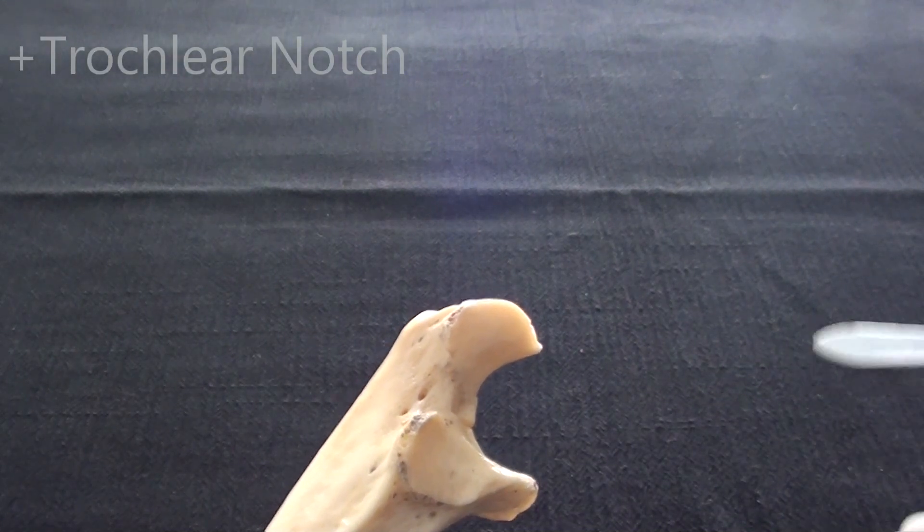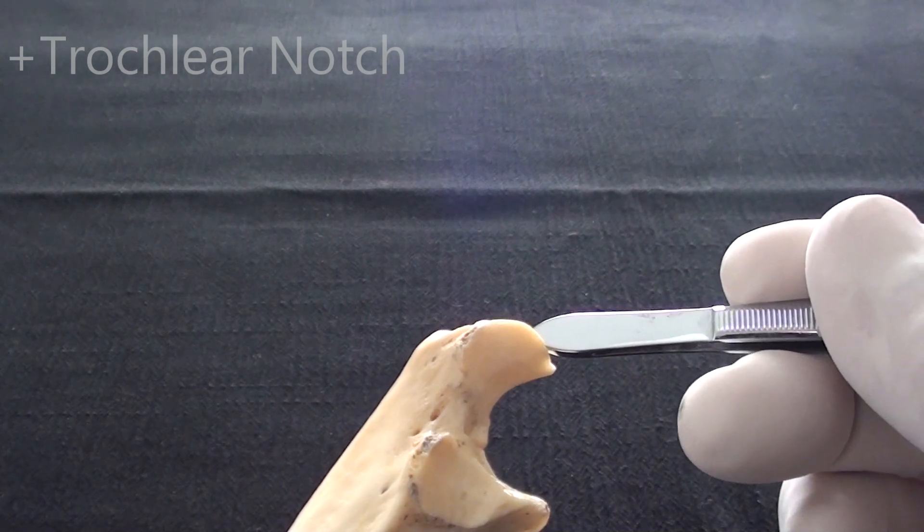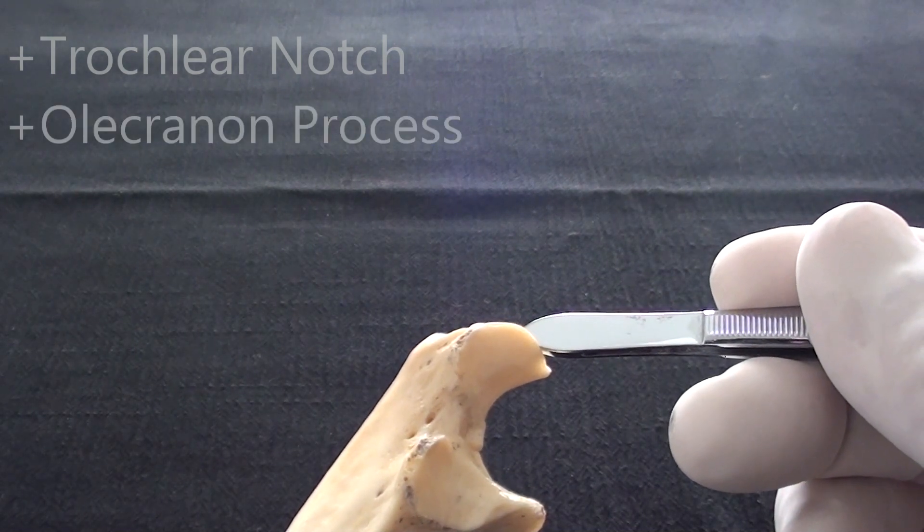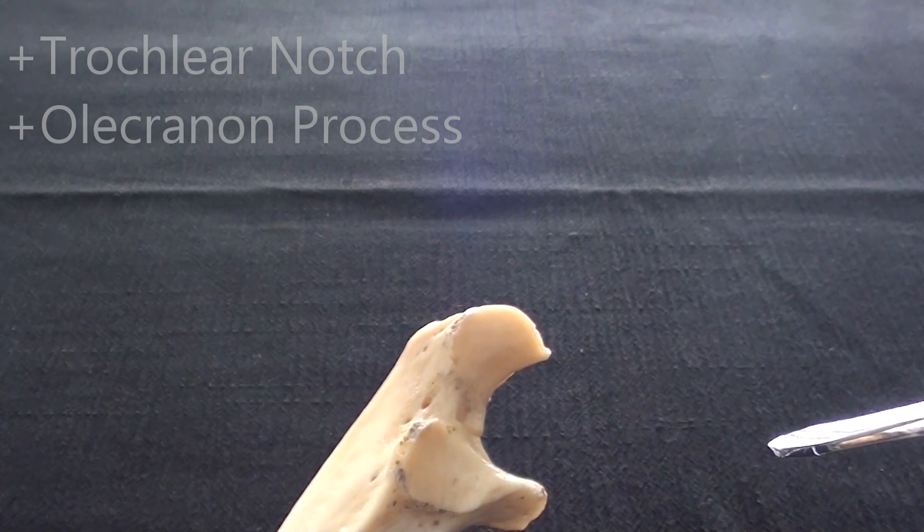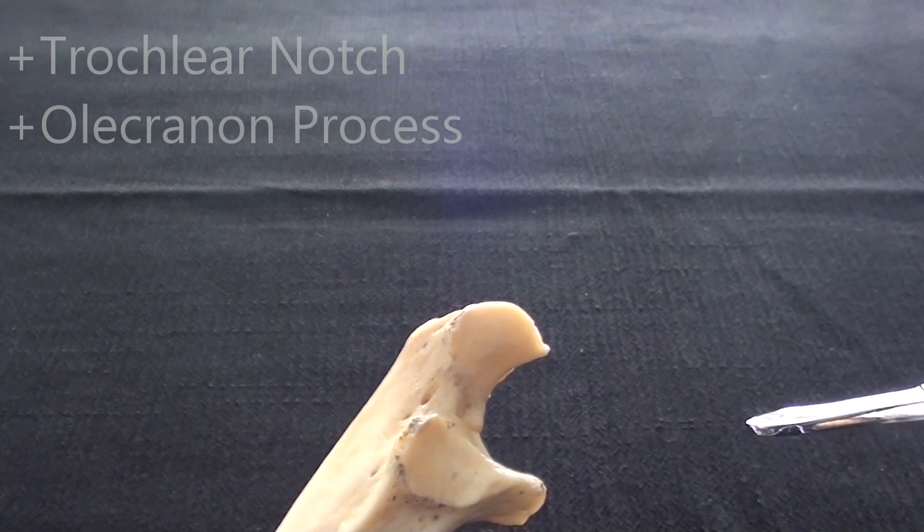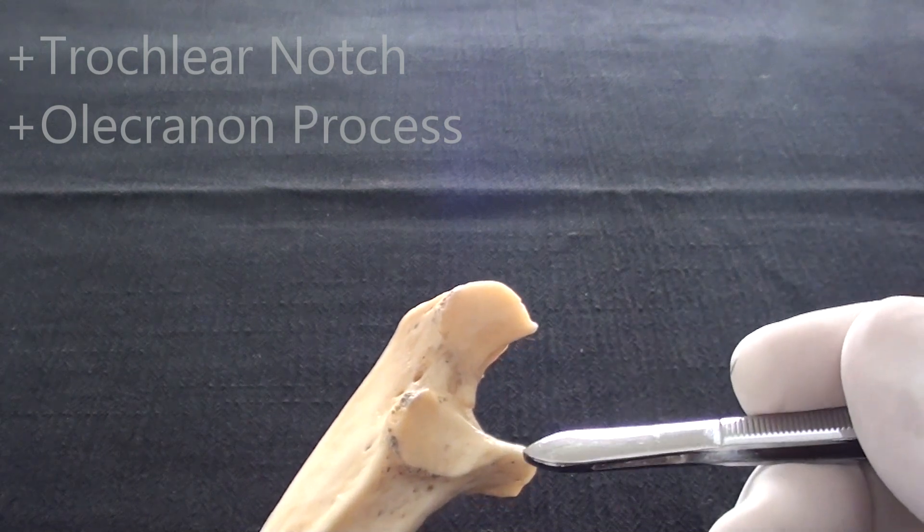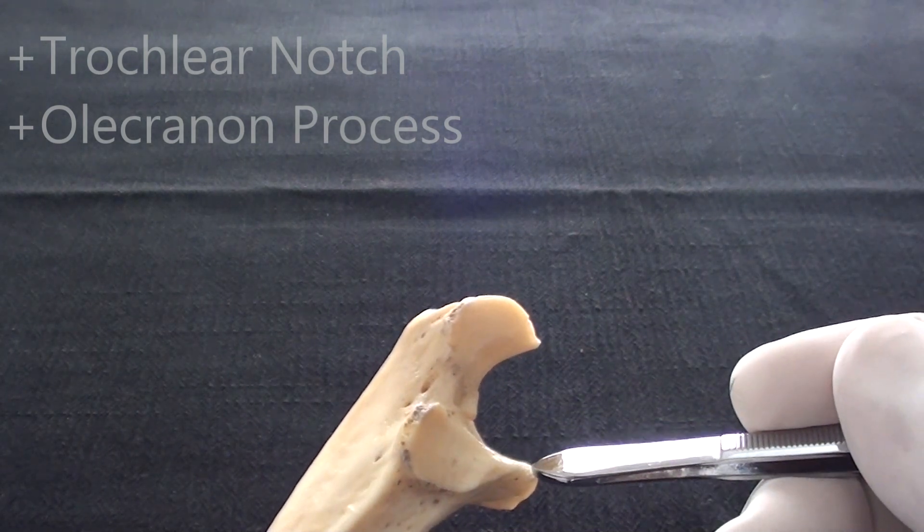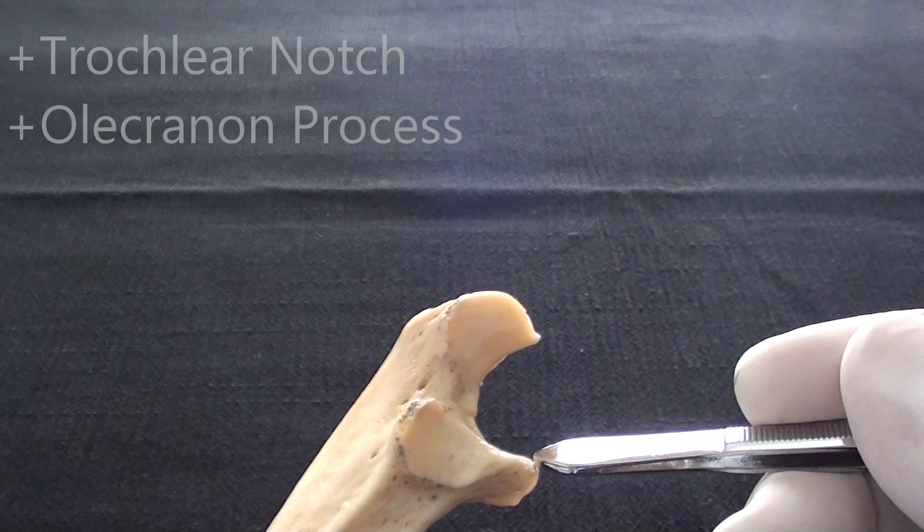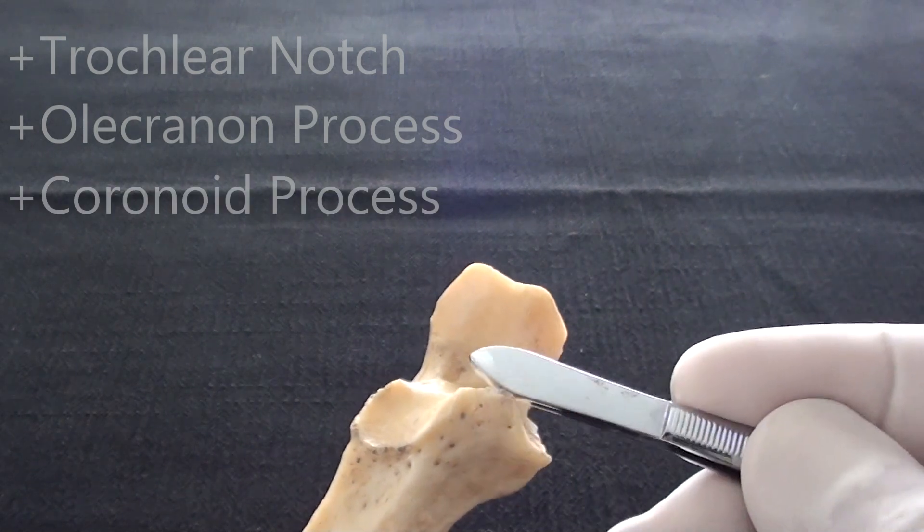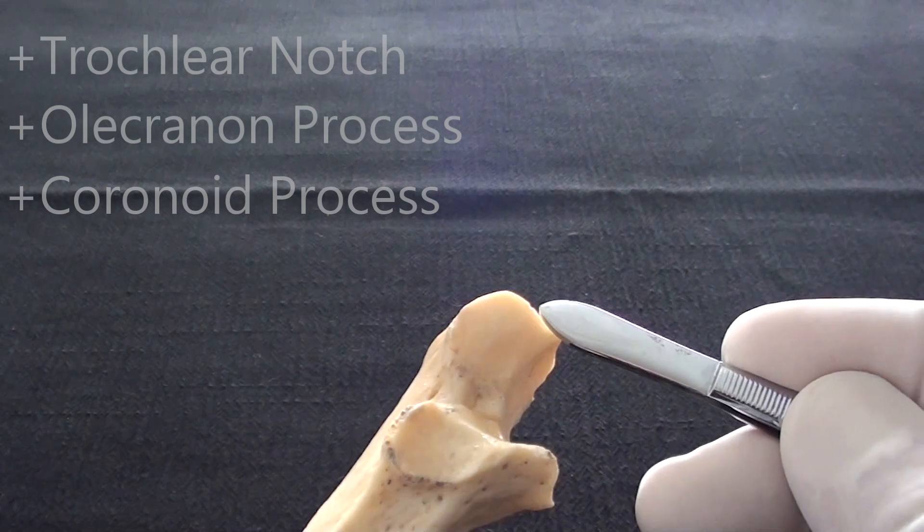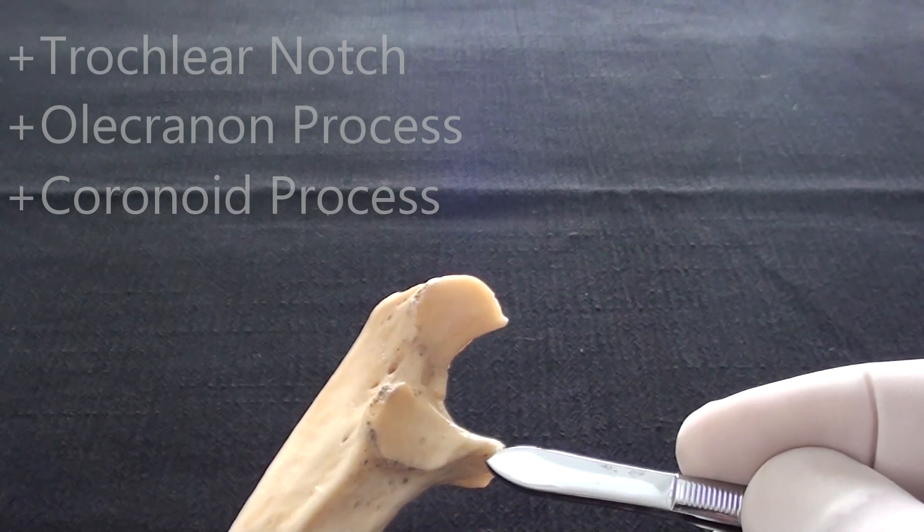It is marked superiorly with very massive olecranon process, which essentially is part of the elbow that we can feel whenever we have elbows brought in full flexion. Inferiorly there is another projection and that one is called the coronoid process. So the trochlear notch is marked between olecranon process and coronoid process.